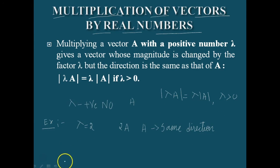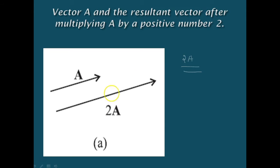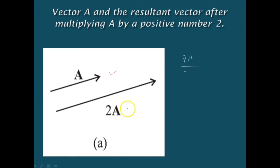We can see this in the figure. Vector A and the resultant vector after multiplying A by a positive number 2 gives 2A. This is A and this is 2A — they are moving in the same direction. The direction is not changed even though the magnitude is changed. That is the multiplication by a real number.